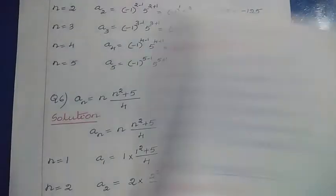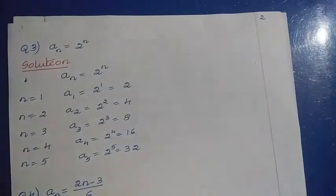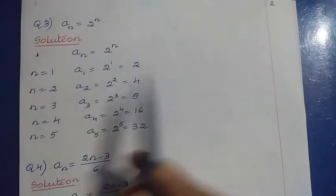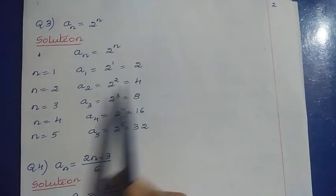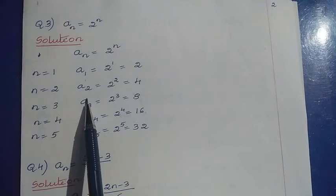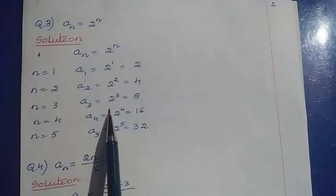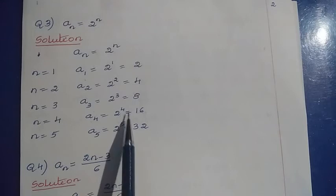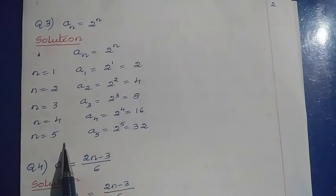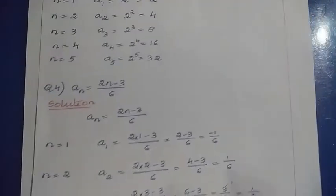Question 3: aₙ = 2ⁿ. We have to find the first 5 terms. For n = 1: a₁ = 2¹ = 2. For n = 2: a₂ = 2² = 4. For n = 3: a₃ = 2³ = 8. For n = 4: a₄ = 2⁴ = 16. For n = 5: a₅ = 2⁵ = 32.